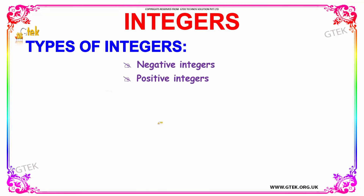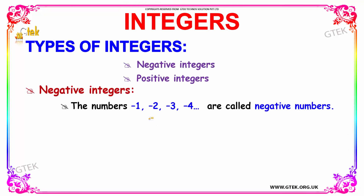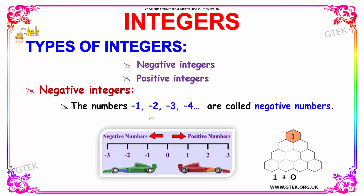Next we are going to see the types of integers. There are two types of integers: negative integers and positive integers. The numbers which have a negative sign in front of them are said to be negative integers.